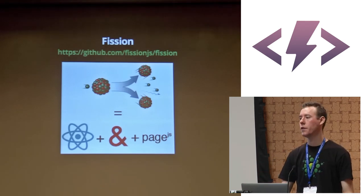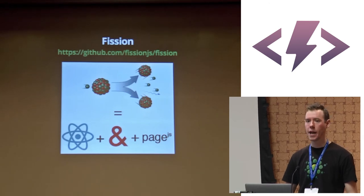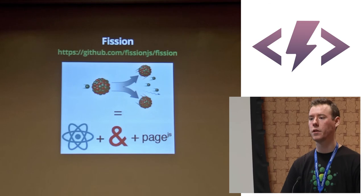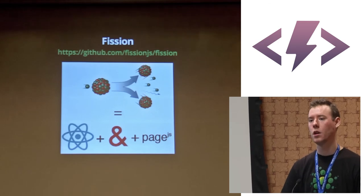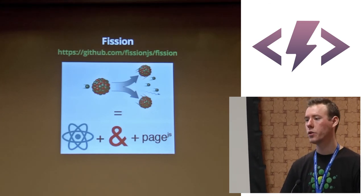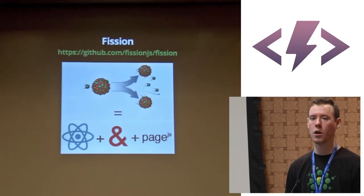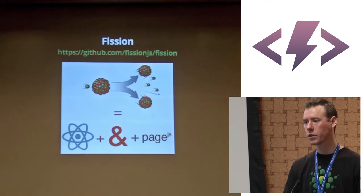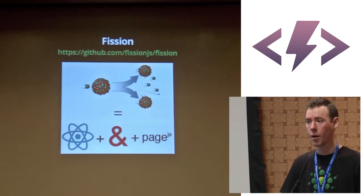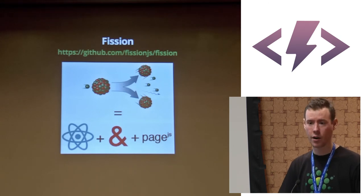Ampersand is something that came out of &yet, which is a Node.js and JavaScript shop. Basically what it is is a port — a modular port of Backbone. They broke all the Backbone pieces into modular CommonJS modules so you could use them sanely with Browserify, because Backbone comes from an era before module systems on the front end.